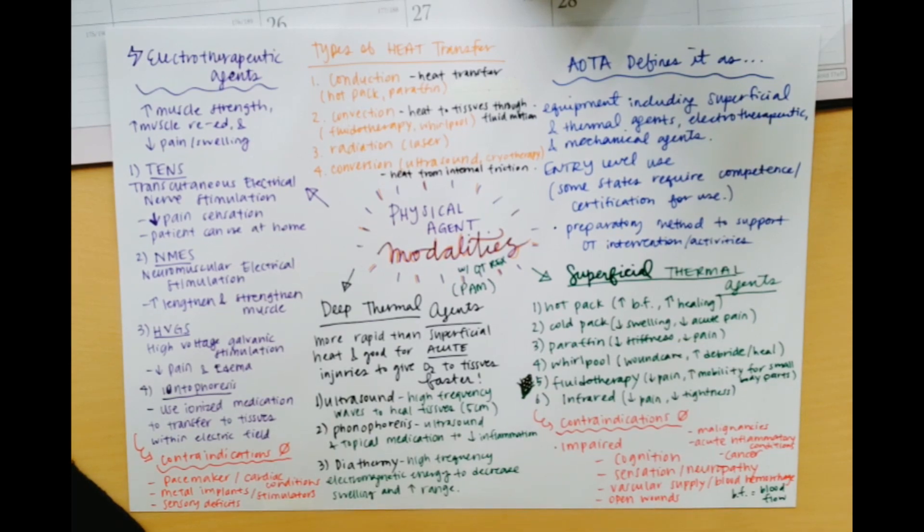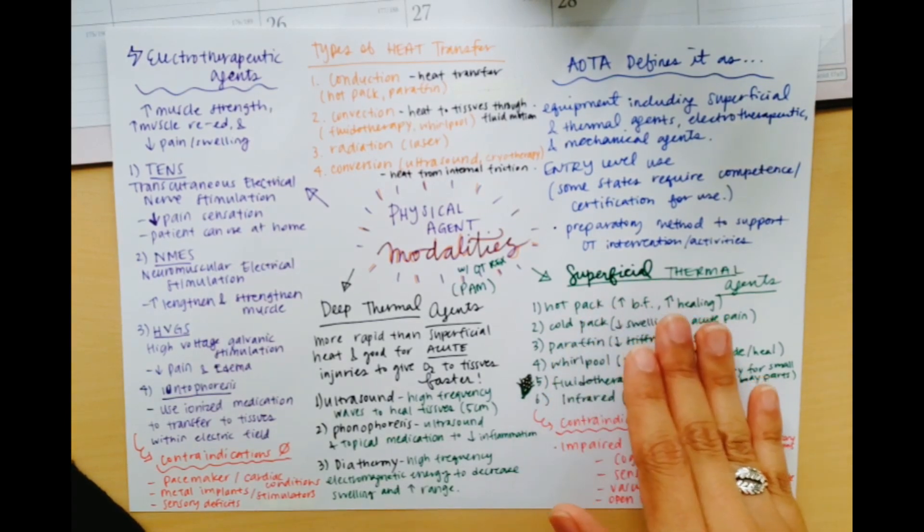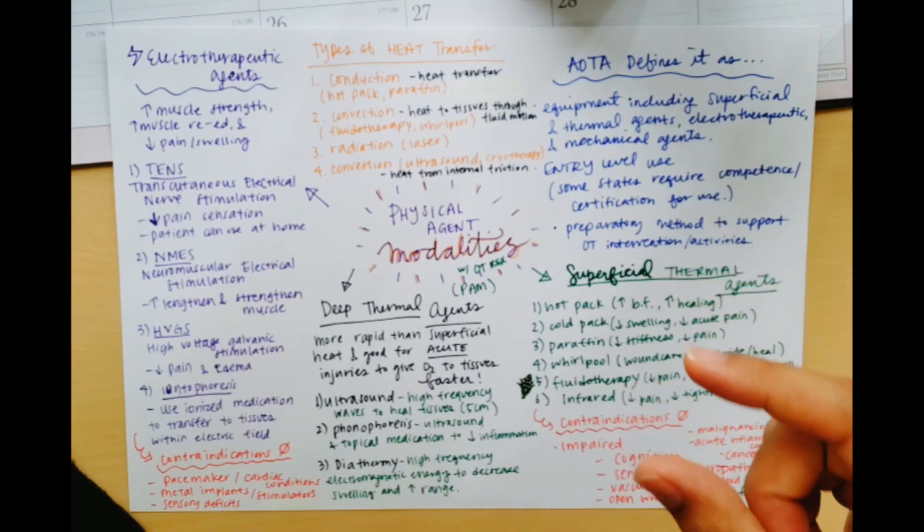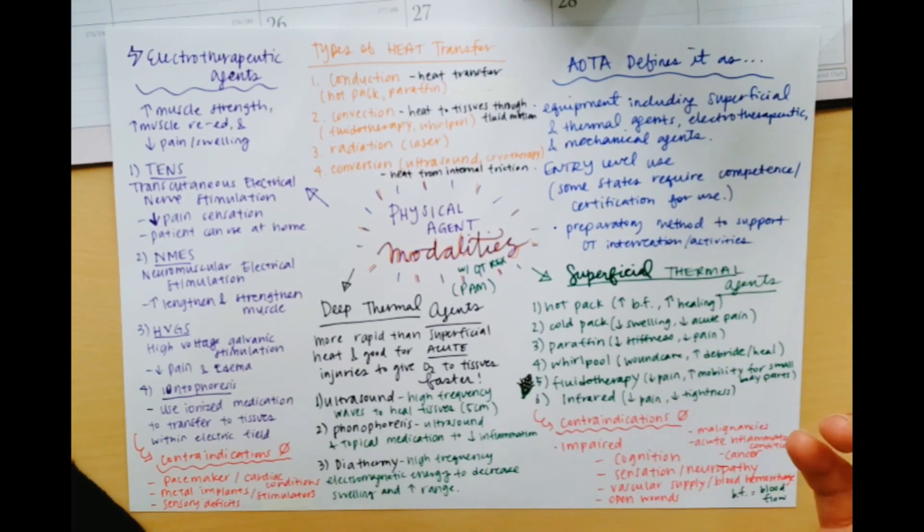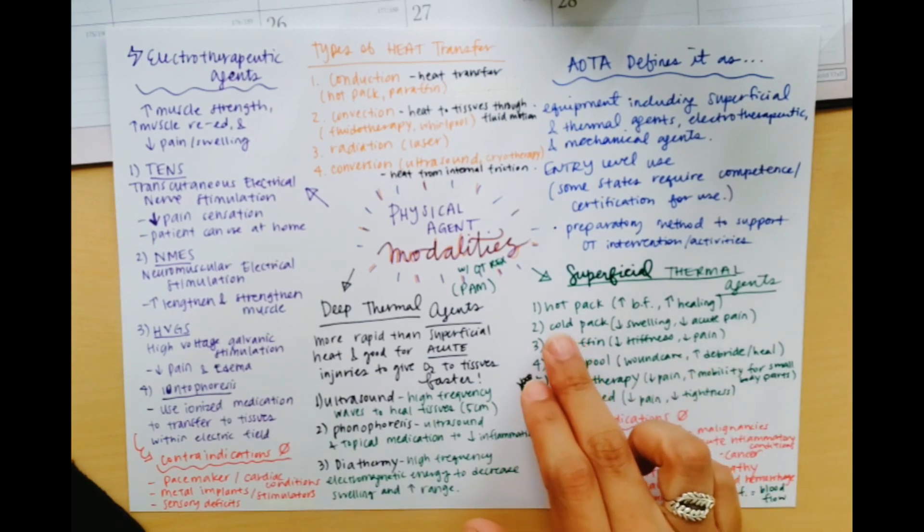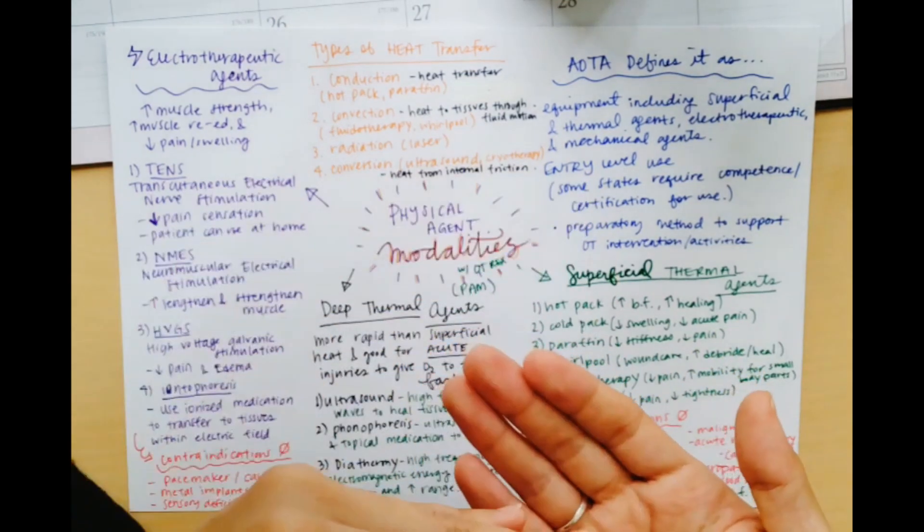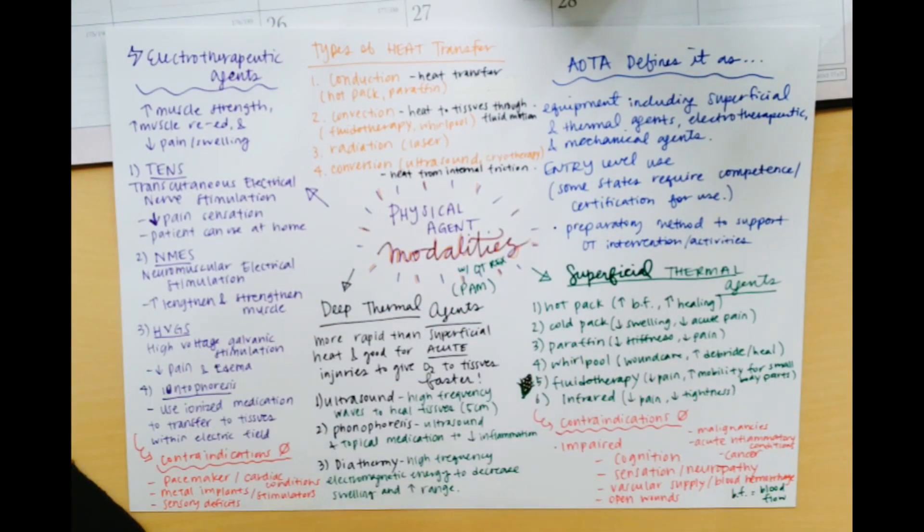So let's get started with the different types of agents, starting with superficial. So as the word superficial would indicate, it's a lot more of a shallow level of heat. So we're thinking like centimeters. And if we apply something like a hot pack to the top of your skin, then it's going to radiate the effects into your skin by a certain amount of centimeters. And it is superficial. So hot packs, cold packs, paraffin wax, whirlpool, fluidotherapy, and infrared are all thermal agents that are superficial.